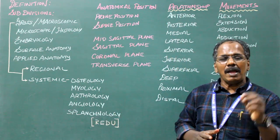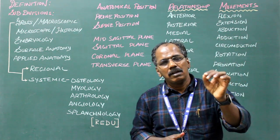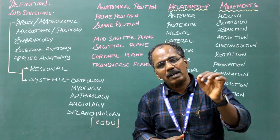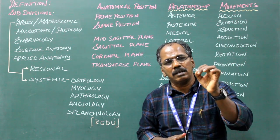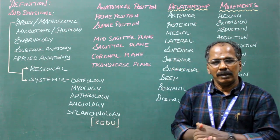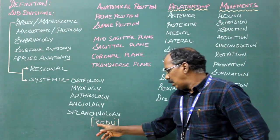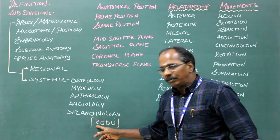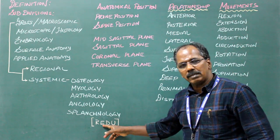Splanchnology is the study of soft parts or soft organs present in the body. This includes the respiratory system, endocrine glands, digestive system, and urogenital system.